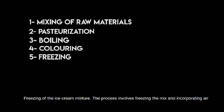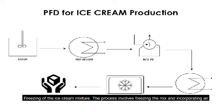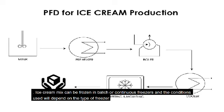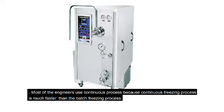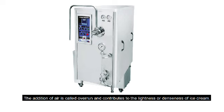Freezing of the ice cream mixture: the process involves freezing the mixture and incorporating air. The ice cream mixture can be frozen in batch or continuous freezers, and the conditions used will depend on the type of freezer. Most engineers use a continuous process because it is much faster than the batch freezing process. The addition of air is called overrun and contributes to the lightness or denseness of ice cream.